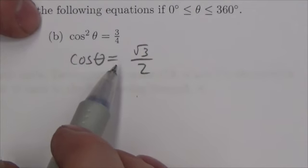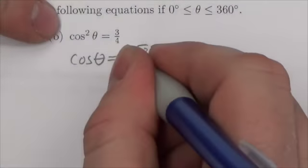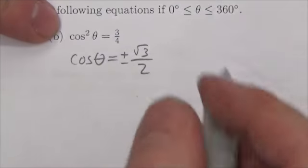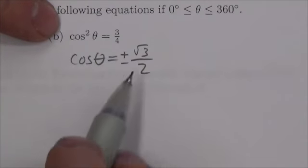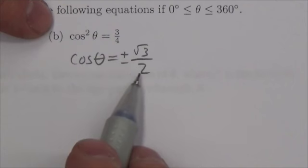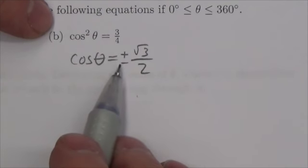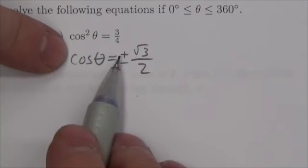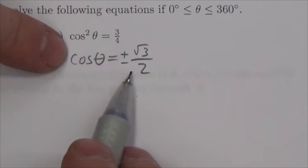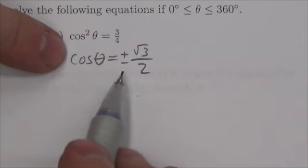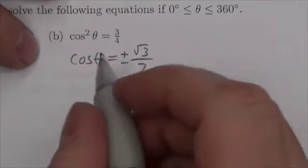Now because I took the square root, I don't know whether the intention was the positive or the negative root there, so I write that down, plus or minus root 3 over 2. The significance of the plus or minus is that cosine is positive in two quadrants and negative in two quadrants, so what this really means is that I'm looking in all four quadrants.